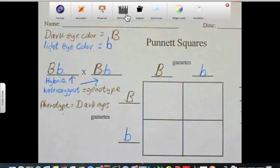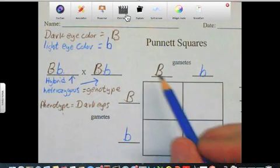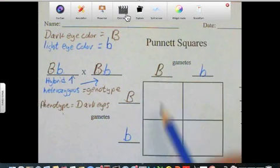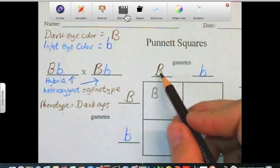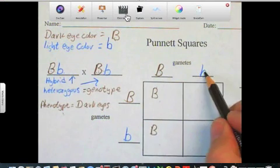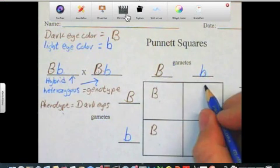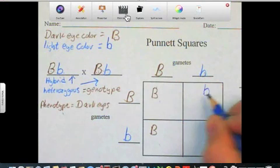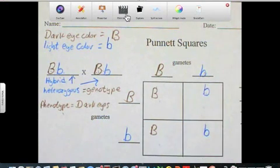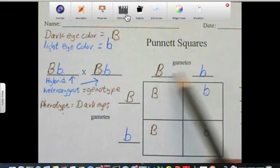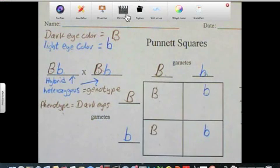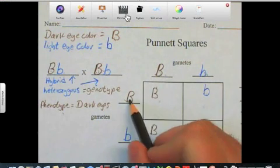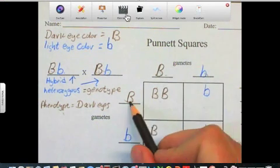To combine them and to use the Punnett square, we want to bring the top ones down to each square. So capital B we'll bring down, this goes down here, this goes down there. We go to the next column heading, in this case, we have the lowercase, the recessive allele. Bring that down, bring that down. Okay. Now we've done the top two, so now we're going to go along the rows. And the rows we have to bring one over to each cell in our Punnett square. So we bring this one over to the one to the right, we bring this one over to the one to the right.